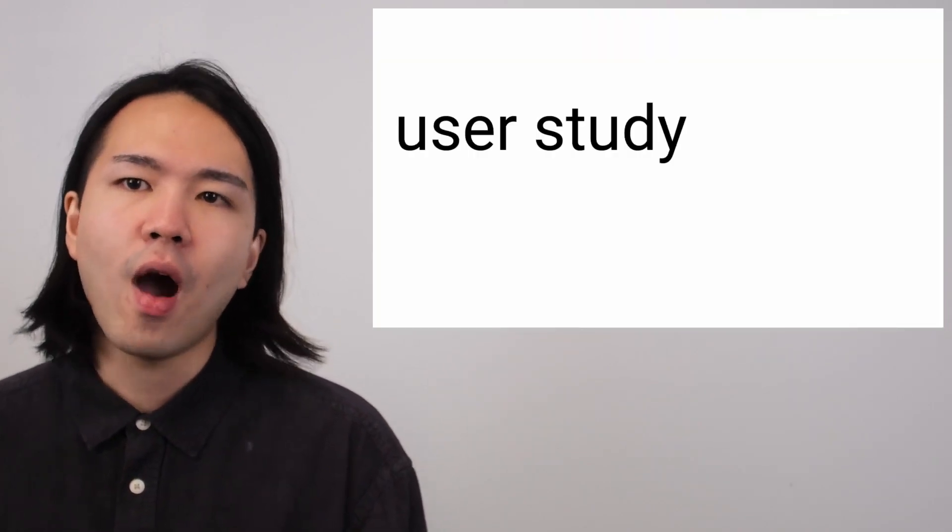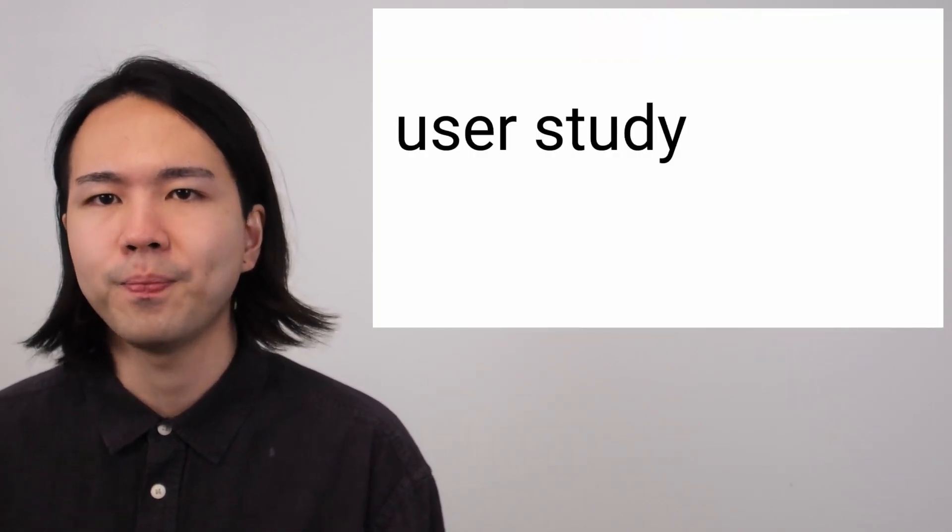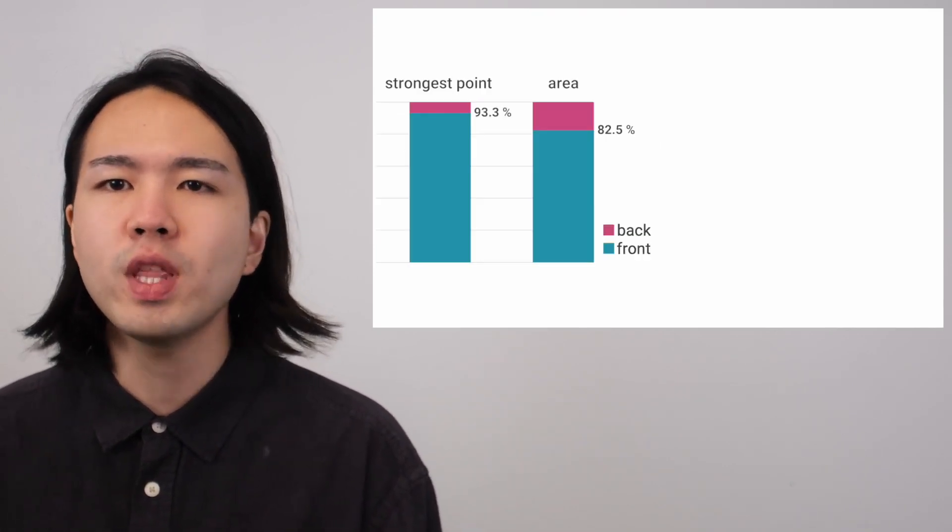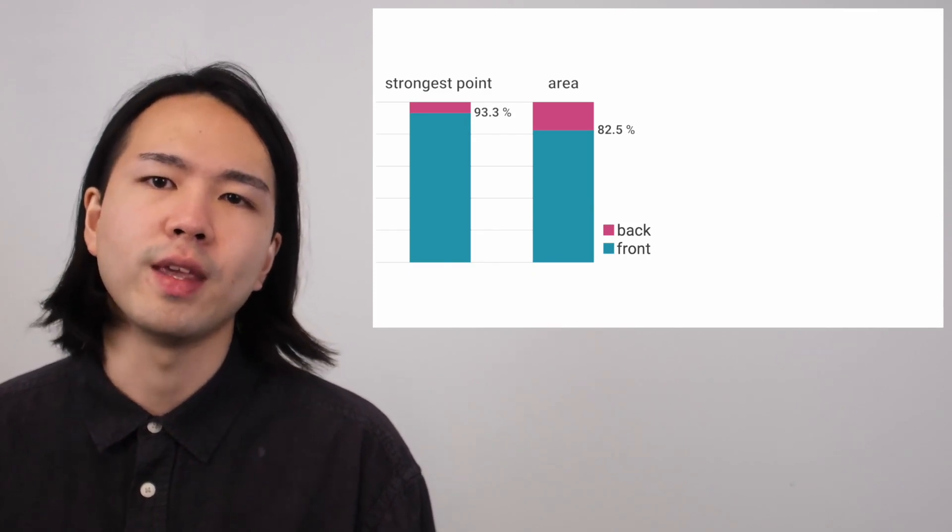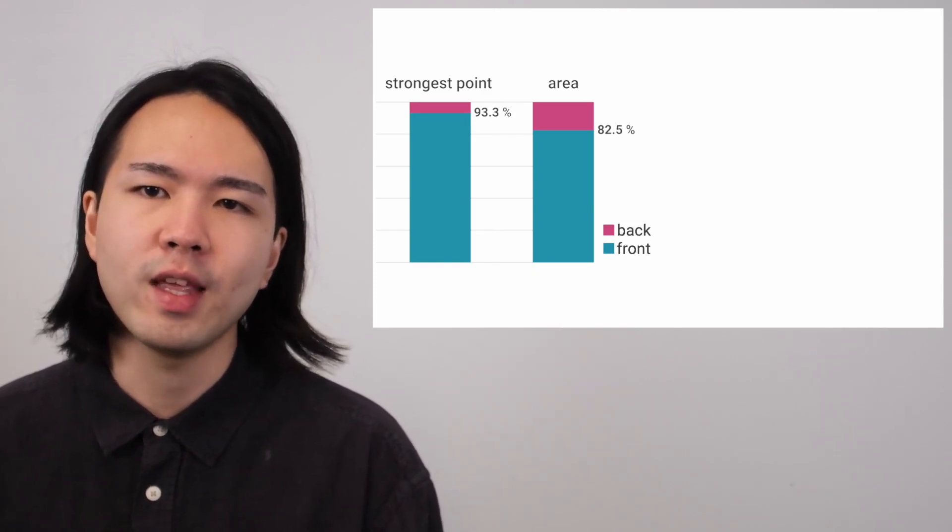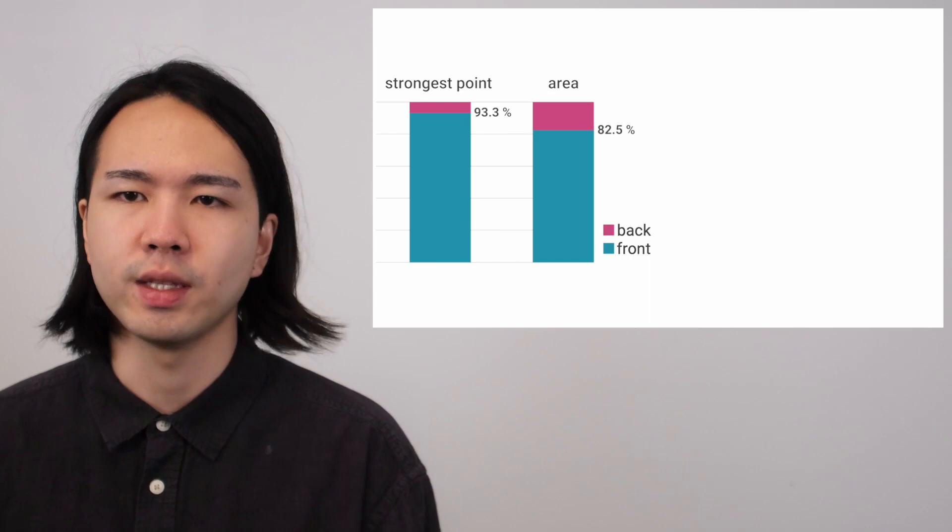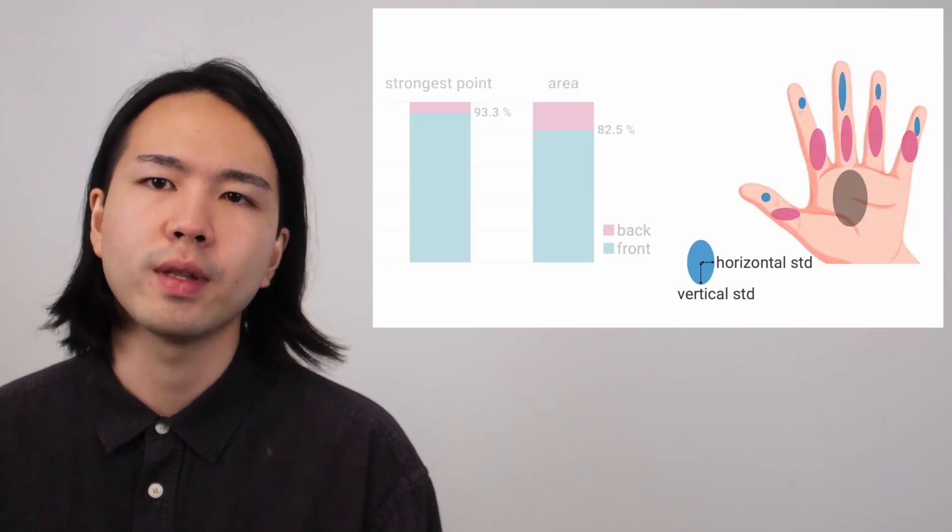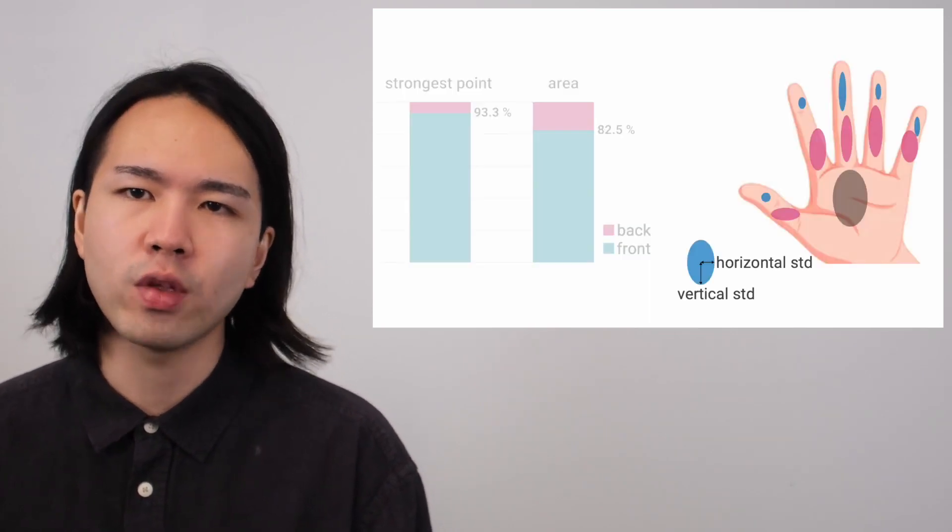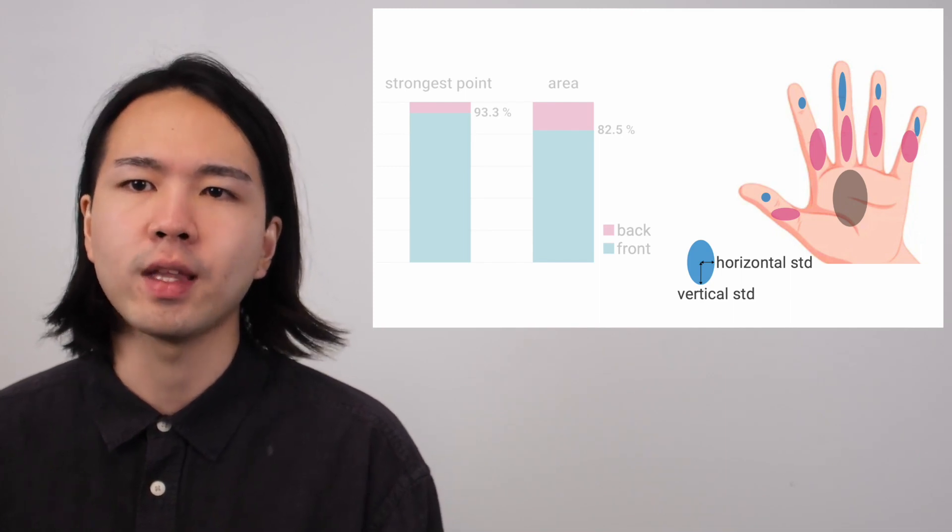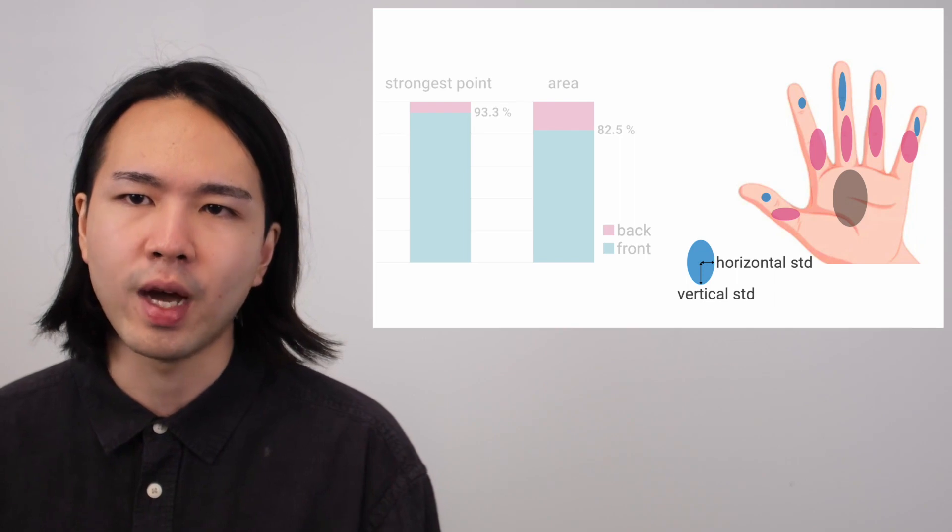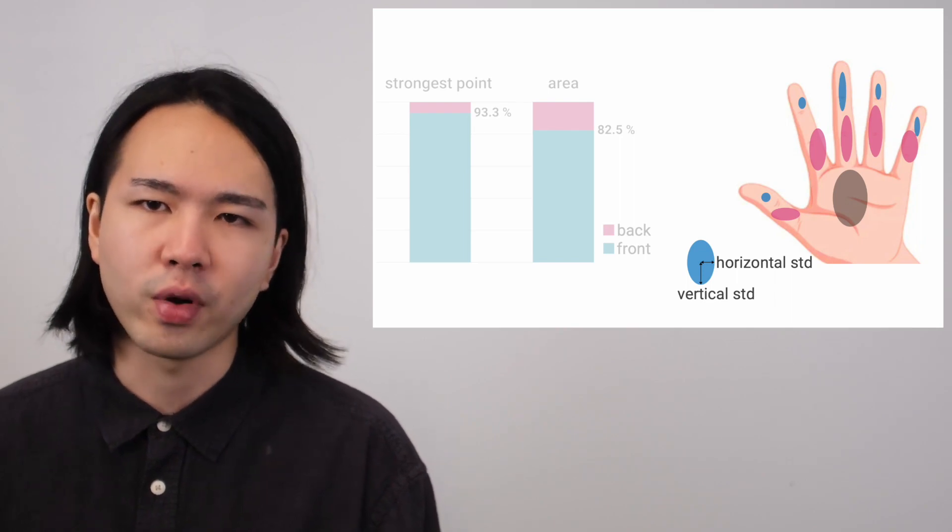Now let's see how accurate our technique is. We asked 10 participants to report which part of the hand they felt the stimulation. First of all, as you can see, over 90% of the sensations were felt in the palmar side of the hand. Moreover, the standard deviations of the locations of the perceived stimulations also show that our technique creates sensations at the 11 points on the palmar side of the hand that are spatially well separated.